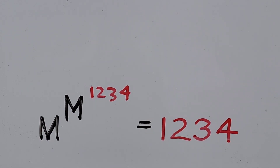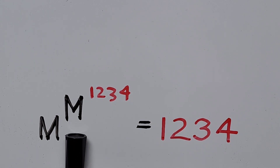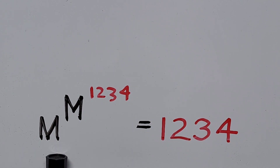Hello everyone, we have here a nice exponential equation. We have m instead of x — just for a change, since we can always designate any letter in place of a variable. We have m to the power of m to the power of 1234 equals 1234, and we're going to find the value of m.